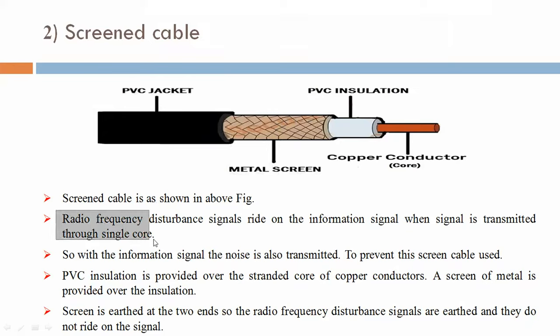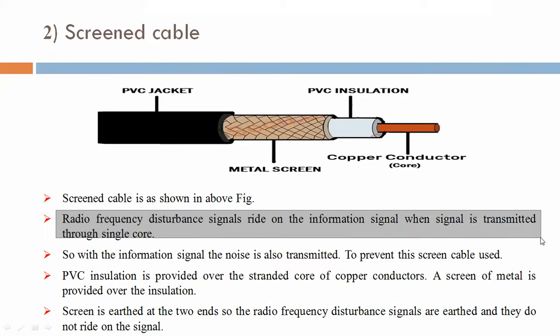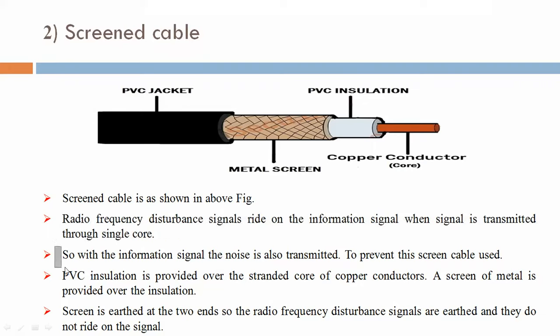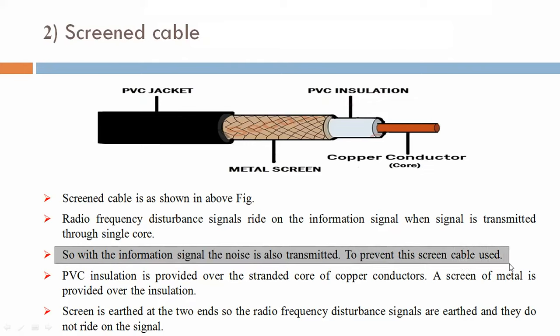Radio frequency disturbance signals ride on the information signal when it is transmitted through a single-core wire. When a single-core wire transmits radio frequency interference along with the information signal, noise is also transmitted. To prevent this, a screen cable is used.